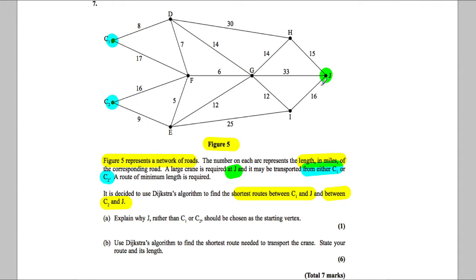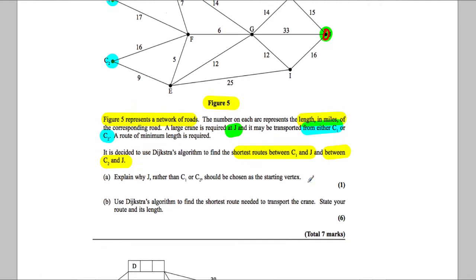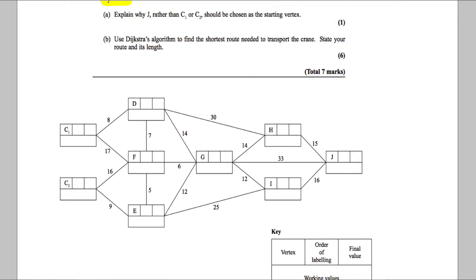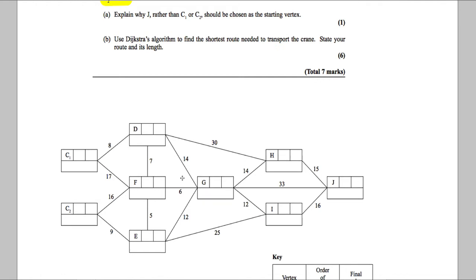However, if we were clever and did the Dijkstra starting at J, which is the reverse route, in one go it would show us the shortest distance to C1 from J and C2 from J. We can just reverse that route to find the quickest from this side to this side. So that's why it's better.